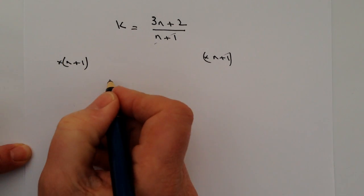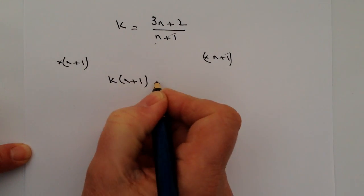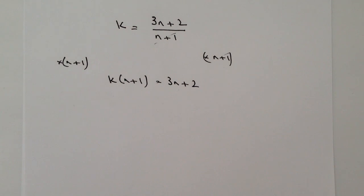So the formula itself becomes k times n plus 1 equals 3n plus 2. Okay, I hope that's alright with you. If you're not sure about that, if you have a look at some of the other videos on the playlist, that will give you a little bit more help.